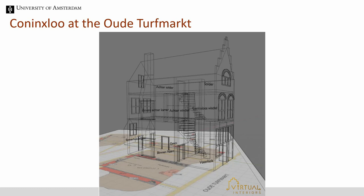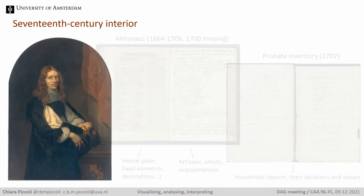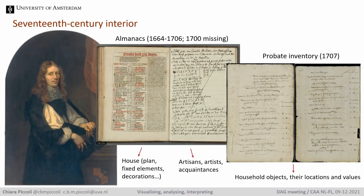In the next and final example, I'll show another way to visualize uncertainty and provide access to the sources underlying the 3D reconstruction. This is the case of the entrance hall to the house that Pieter de Graaf had built in 1664 on one of the larger canals in Amsterdam, the Herengracht. The Graaf, seen here in this portrait with his wife Jacoba Biker, was a member of one of the most influential families in Amsterdam, and he lived in this house until his death in 1707. For this case study I could rely on a unique combination of data: a detailed probate inventory drawn up upon the Graaf's death and several archival documents, most notably his almanacs which he kept for over 40 years and which contain information on the construction works on his house.